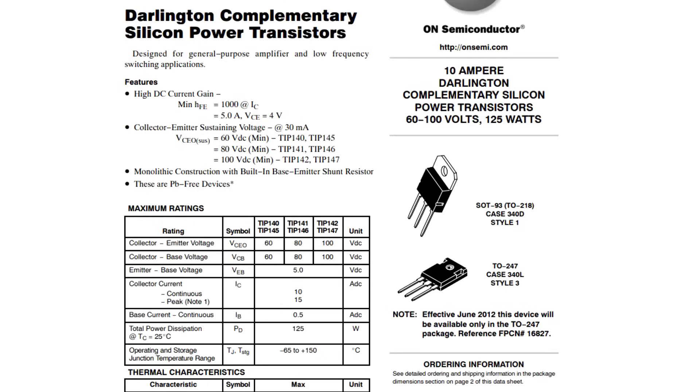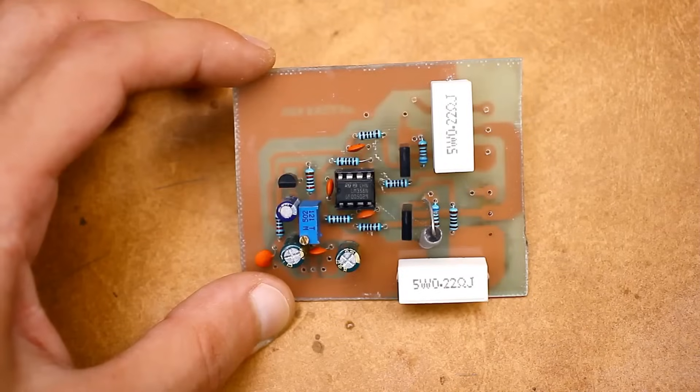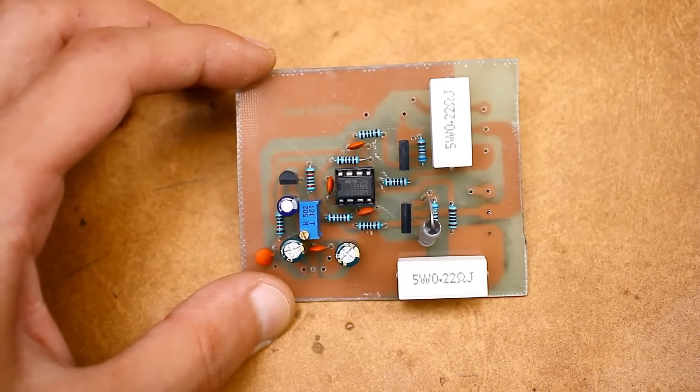The maximum load current is equal to the sum of the collector currents of the switches used. For example, for type 142 switches, this is 10A. Therefore, the maximum current should not exceed 20A, and it's better to keep it at 15A for a small margin.